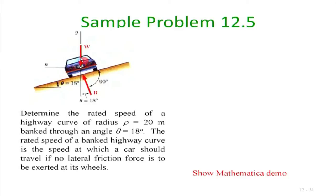The rated speed is the speed at which the car can travel requiring no friction force at the wheels. Note that friction does not always equal μN — it only acts as much as needed, and cannot exceed μs·N. In this geometry, friction may be zero if the car travels at exactly the rated speed.